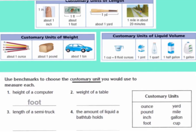Now that we know the benchmarks for customary units, we're going to look at what unit we would use to measure something. Choose the customary units you would use to measure each. If I had the height of a computer — that means I want to measure length — would I use an inch, a foot, a yard, or miles? Miles would be too big. A yard would still be too big. We could use inches, but it might take a long time. I would say we would use a foot to measure the height of the computer.